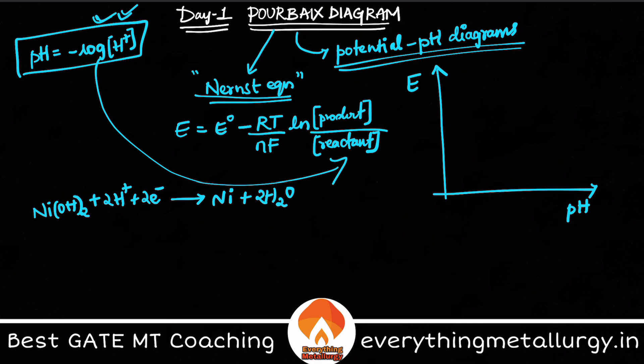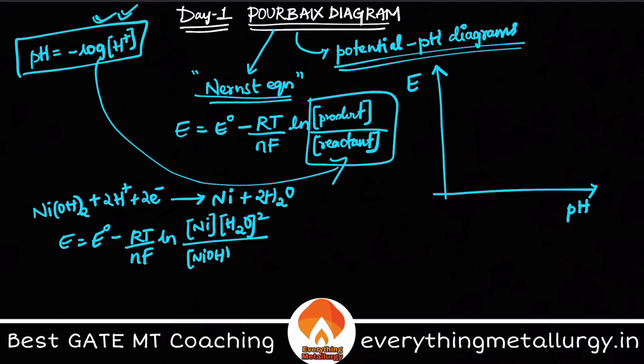Let me take this particular equation. Quickly, if you want to calculate this particular part, that is nothing but E = E0 minus RT by nF into ln of Ni into H2O divided by Ni(OH)2 into H+ concentration squared. This is what we basically get using the activities of product and reactants. But by looking at the equation, we must know that these values are all equal to 1 because we are taking in its standard or pure state. So what we are left with is E equal to E0 minus RT by nF into ln of H+ squared.